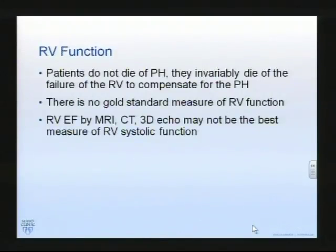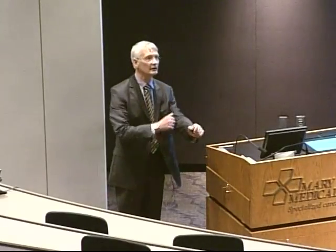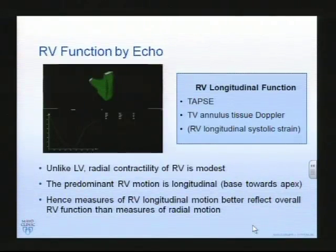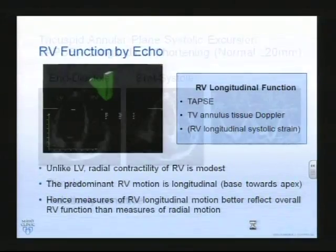There is no gold standard. Certainly right ventricular ejection fraction has not been the most robust measurement for these patients. If we look at right ventricular function by ECHO, unlike the left ventricle, radial contraction is modest - it's predominantly a longitudinal contracting chamber. So if you're going to assess that, you're probably going to want to look at measurements of the longitudinal axis, which would include TAPS.